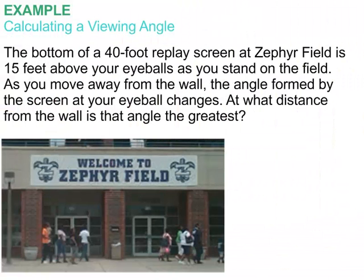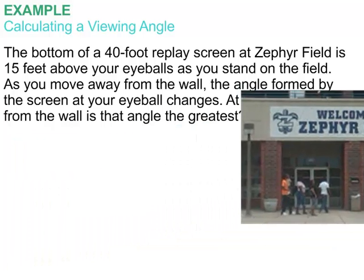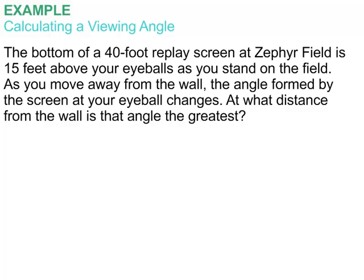Let's get down to what our exact problem is. At Zephyr Field, there is a 40-foot replay screen, and the bottom of that screen is 15 feet above your eyeballs as you stand on the field. As you move away from the wall, the angle formed by the screen at your eyeball changes, and we want to know at what distance from the screen that angle is the greatest. Let's draw a diagram that represents this situation.